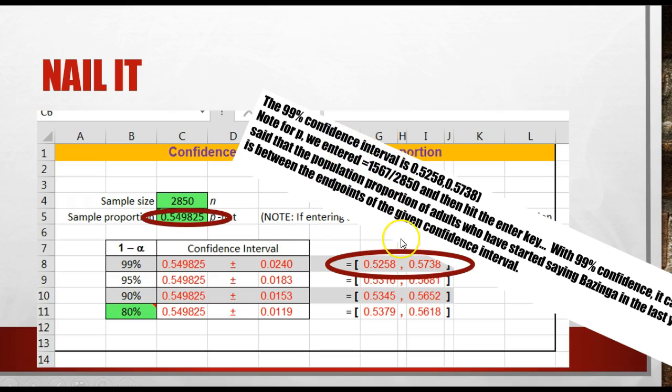So the 99% confidence interval, if they want it to 2 decimals, it would be 0.523 to 0.57. Three decimals would be 0.526 to 0.574. Whatever.